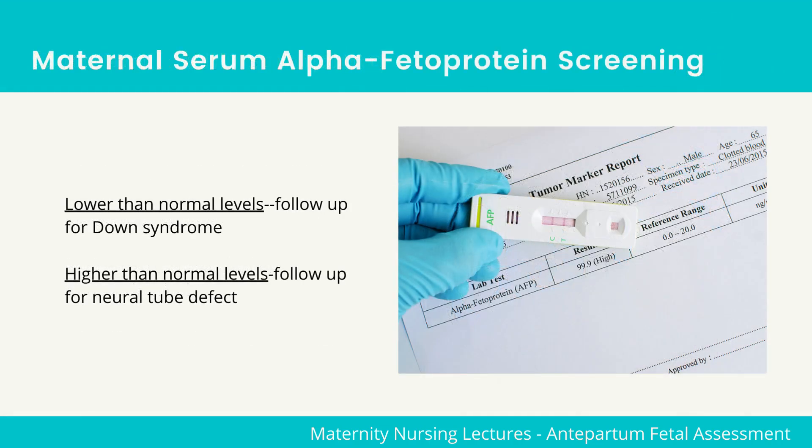The next test to know is maternal serum alpha-fetoprotein screening. This is to screen for neural tube defects and is ideally performed at 16 to 18 weeks of pregnancy. Lower than normal levels would mean a follow-up for Down syndrome, while higher than normal levels would mean a follow-up for neural tube defect.